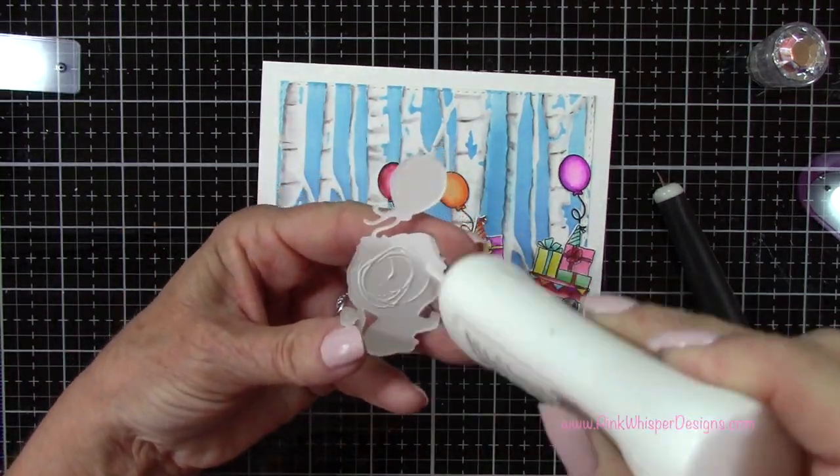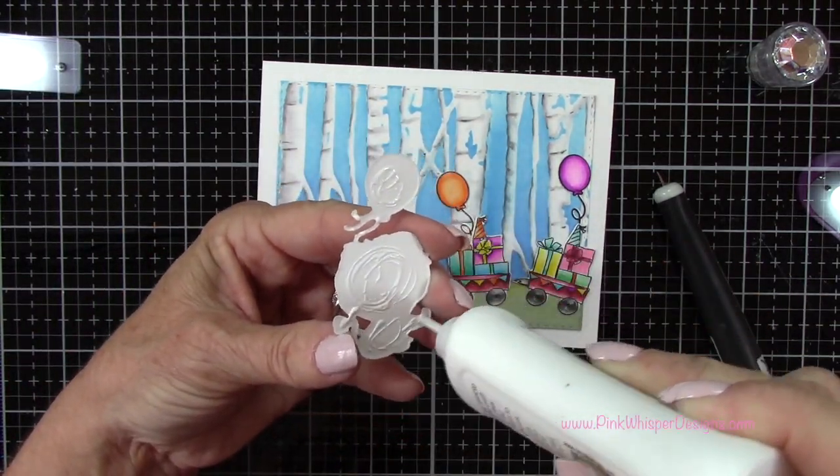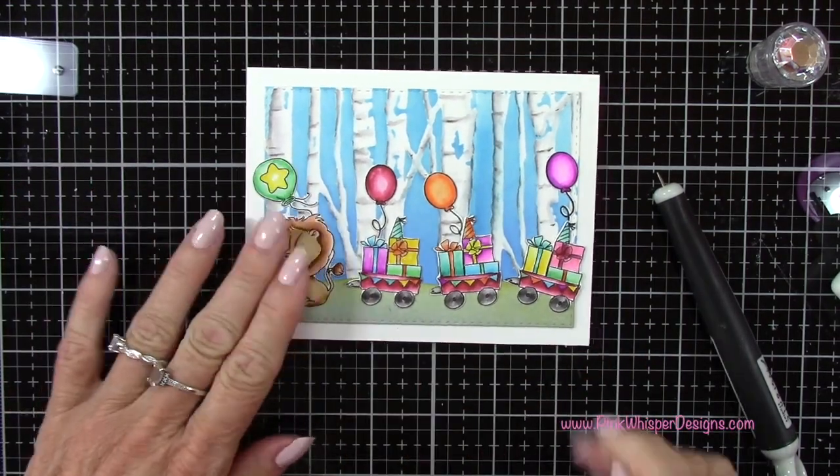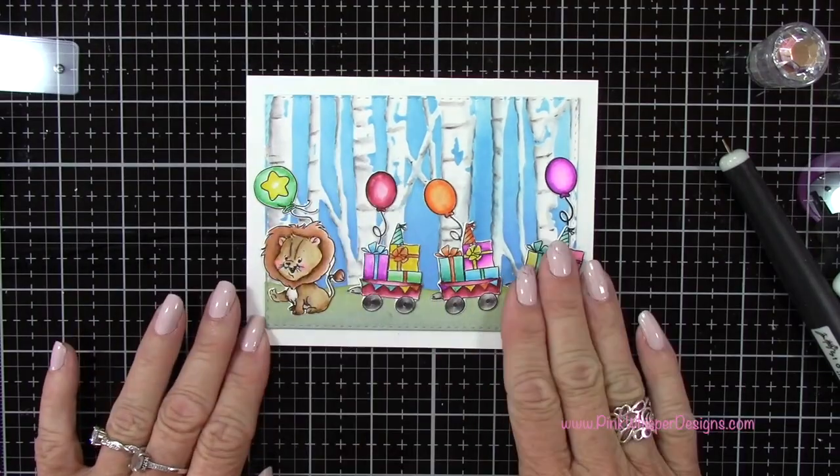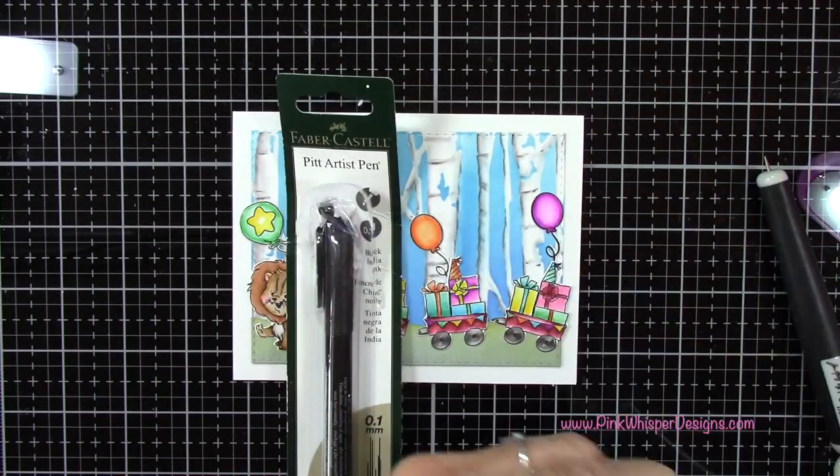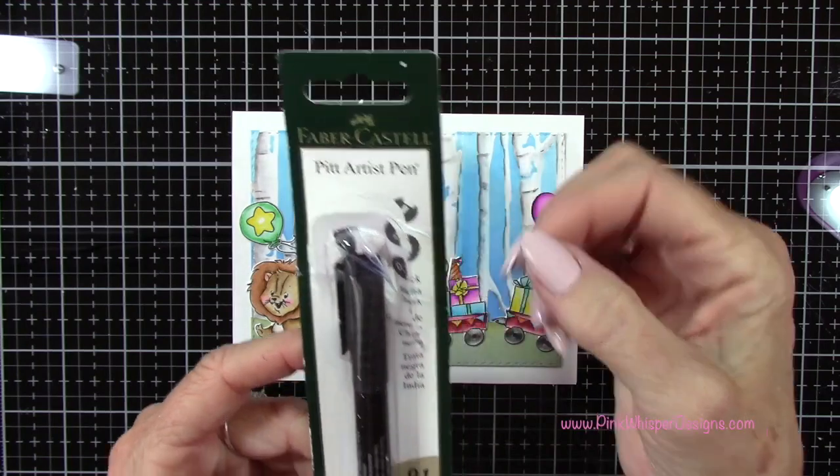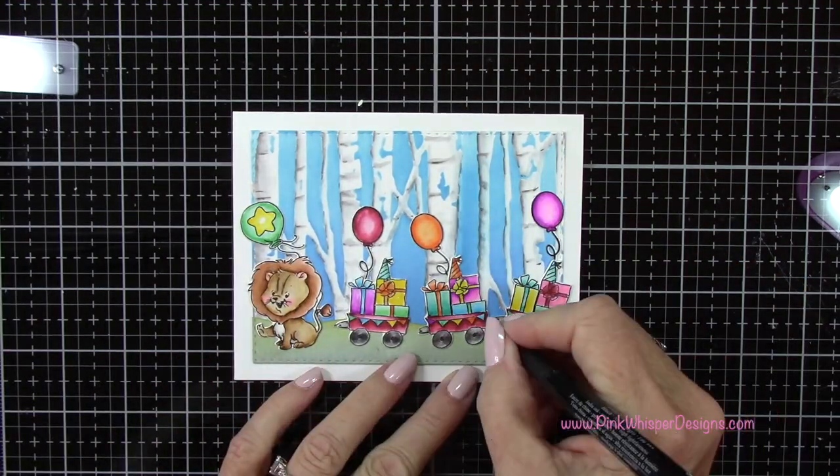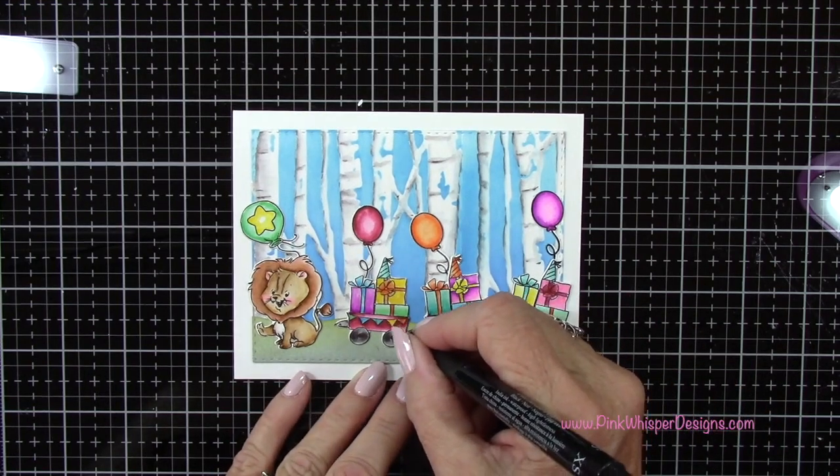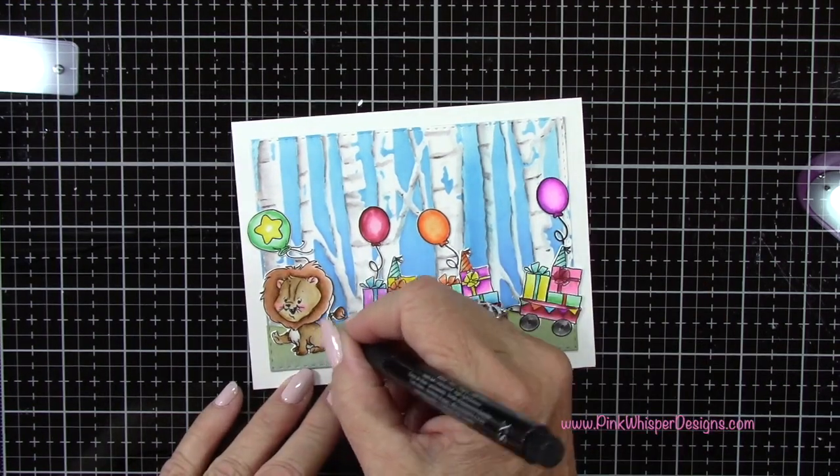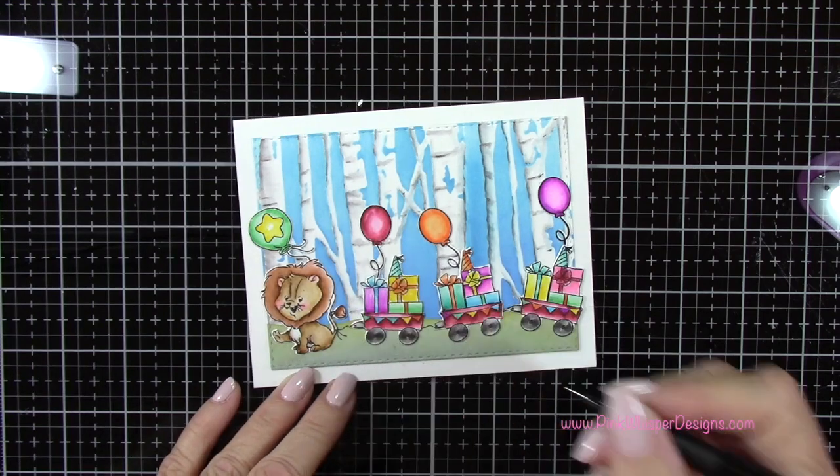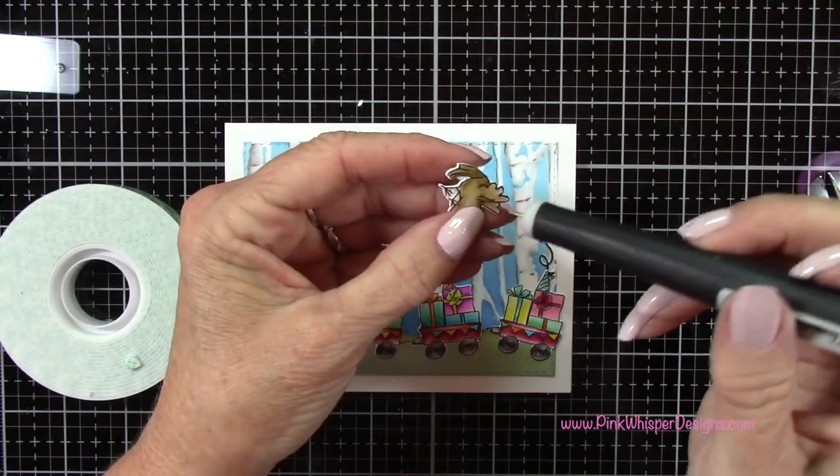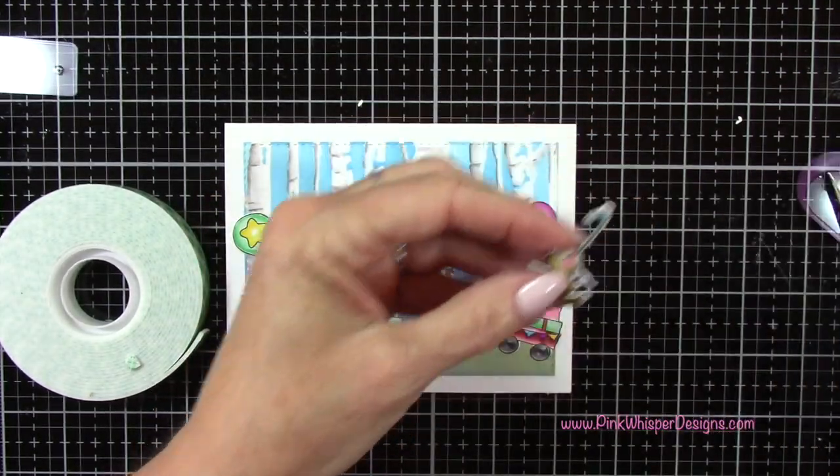Now I'll do the same thing for the little lion. And now with my Pitt artist pen this is the black pen. This is a 0.1 millimeter so it's a very detailed pen. And it is permanent so I'm just going to connect these little wagons together. He's pulling it with his little tail so I'm just going to add a couple little strings off the tail there.